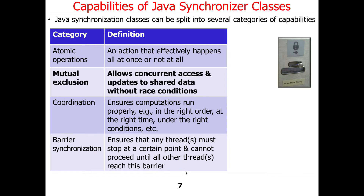The second category is mutual exclusion, which allows concurrent access and updates to shared data without incurring race conditions and other hazards like inconsistent memory visibility and memory model issues.